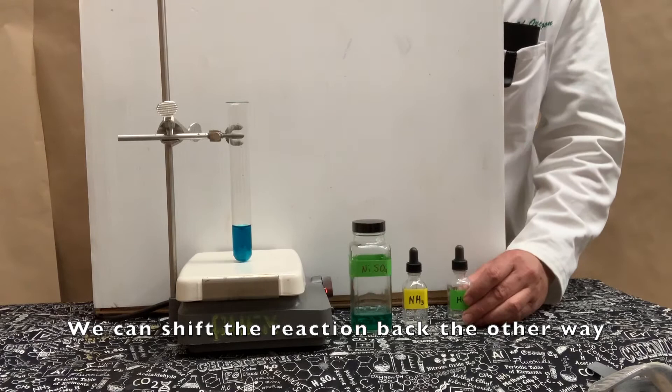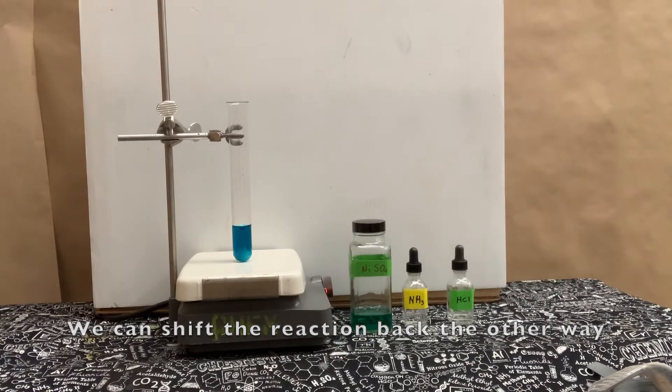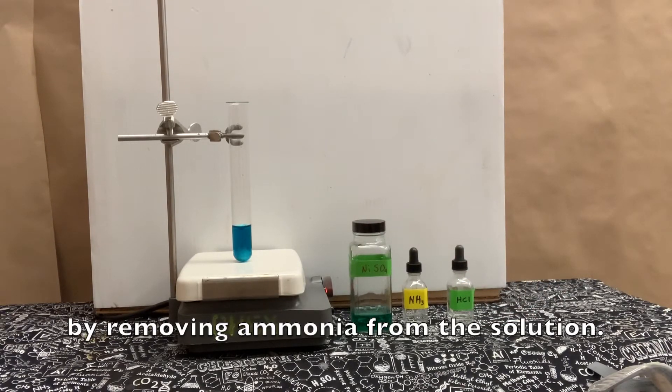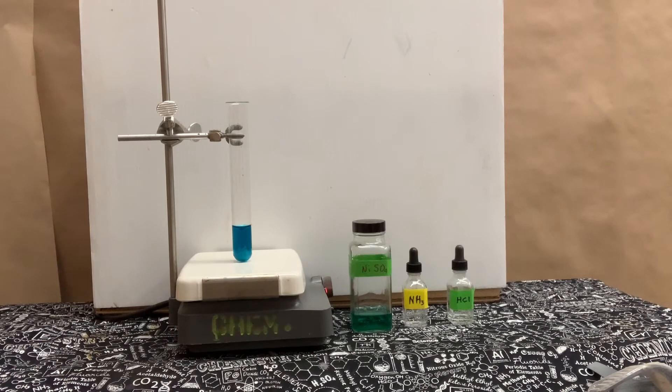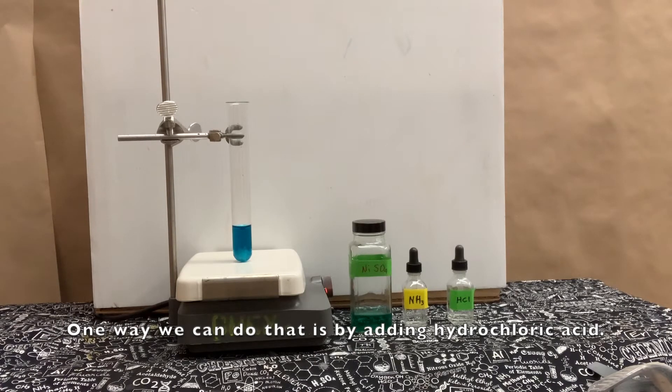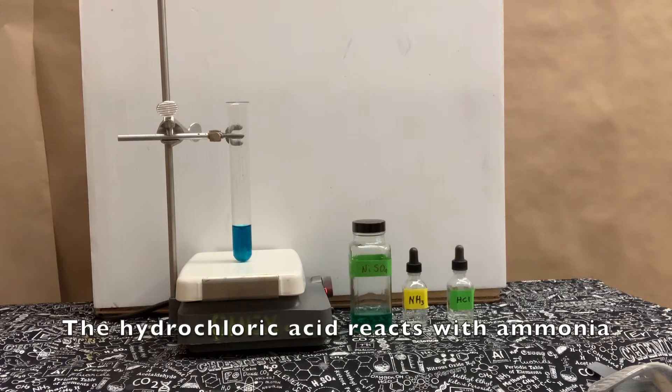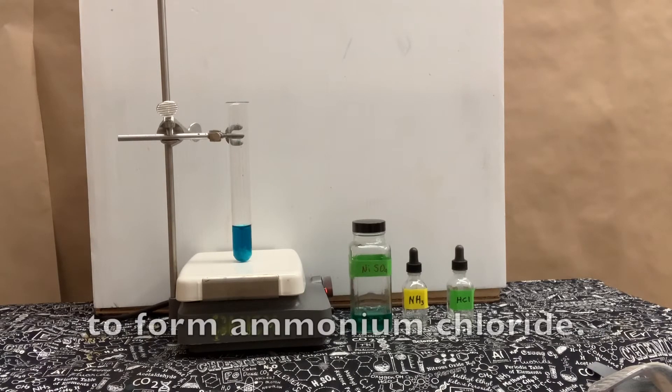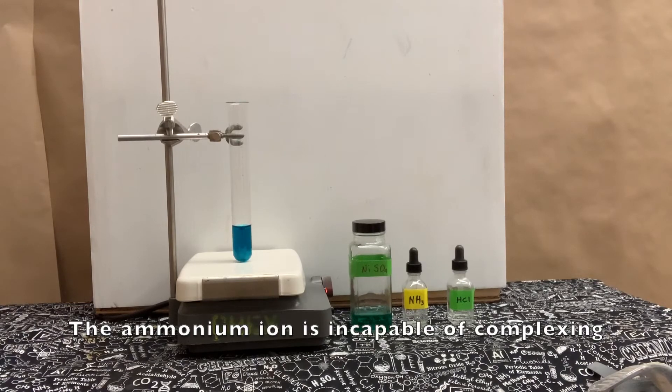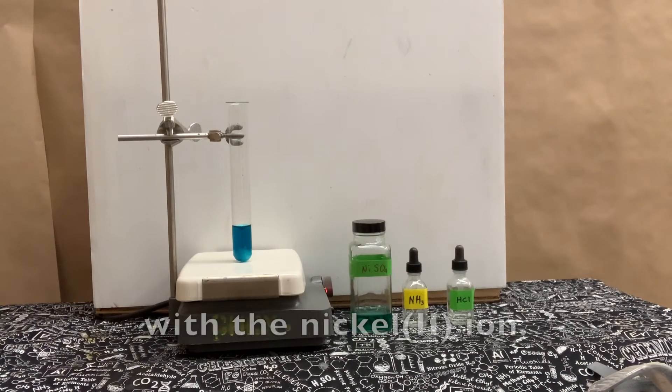We can shift the reaction back the other way by removing ammonia from the solution. One way we can do that is by adding hydrochloric acid. The hydrochloric acid reacts with ammonia to form ammonium chloride. The ammonium ion is incapable of complexing with the nickel(II) ion.